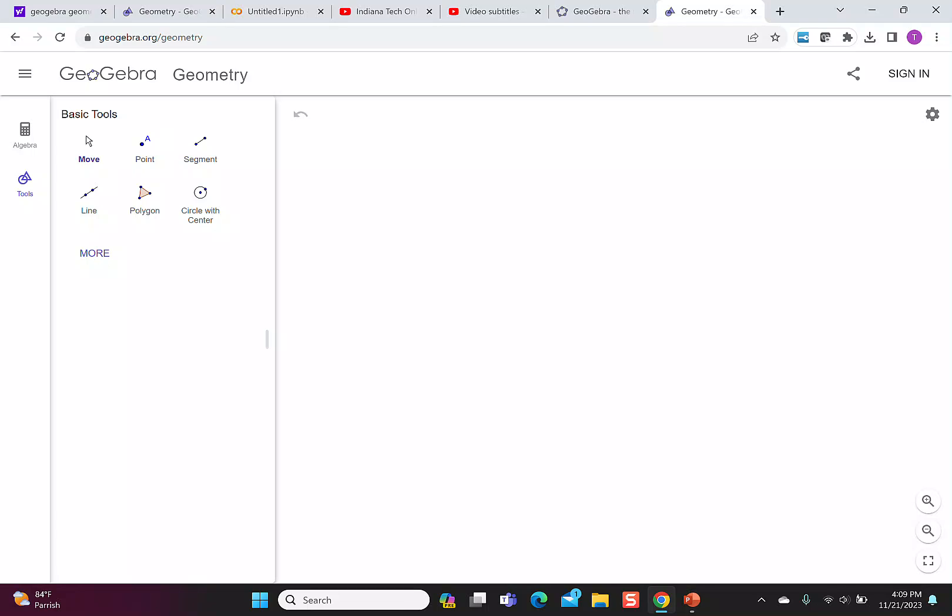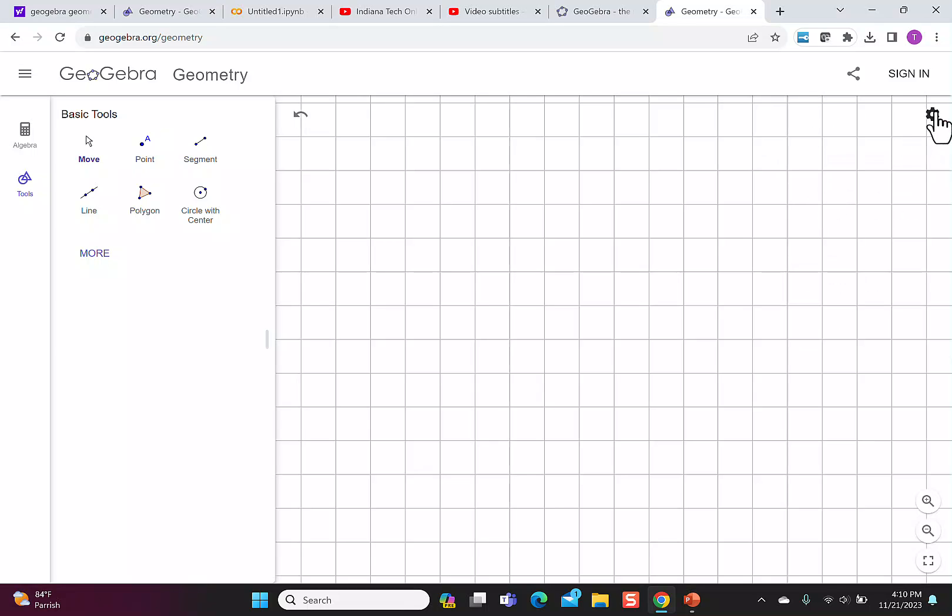By default, the Geometry page does not have a grid or any axis showing, so you may want to turn those on so that you can tell what you're working with. I'm going to go to the Settings, say Show Grid, I like the major grid lines, and then go back and say Show the Axis.